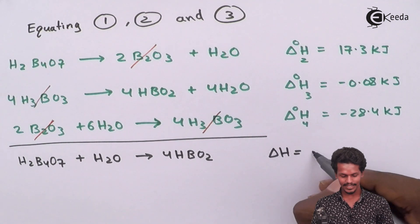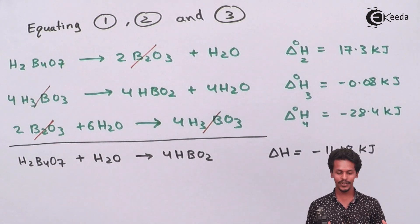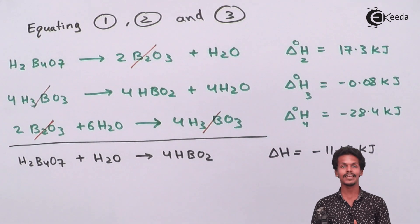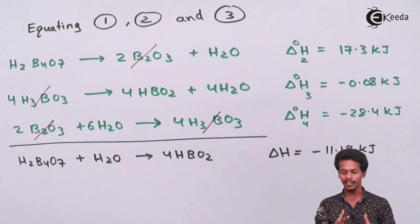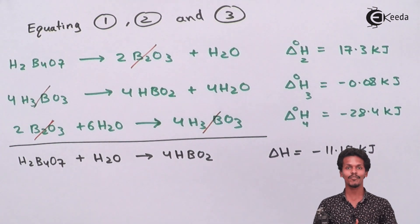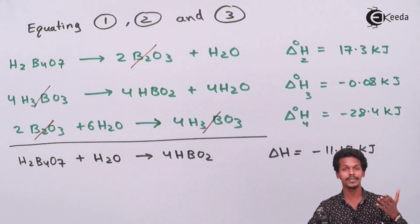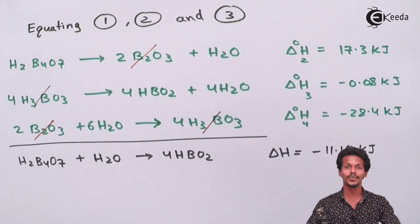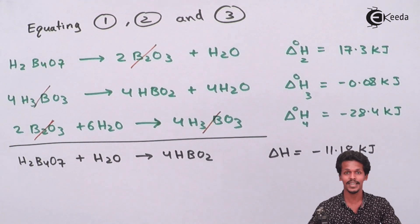The total ΔH = 17.3 + (−0.08) + (−28.4) = −11.18 kJ. This is the change in enthalpy when H₂B₄O₇ reacts with H₂O to form 4HBO₂. This is how Hess's Law allows us to calculate the enthalpy of a reaction that cannot be measured directly. Thank you for watching — please like, share with friends and family, and subscribe to the channel.